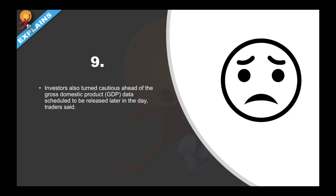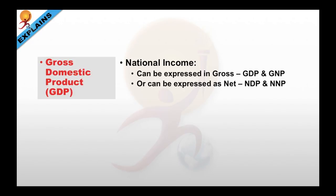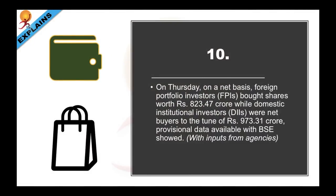Investors also turned cautious ahead of the GDP data. GDP or Gross Domestic Product is one measure of national income for a country. It can be measured by the income method, expenditure method, or the product/value-added method, and takes into account the value of goods and services produced in a country in one year. National income can be expressed as gross — GDP or GNP — or as net — NDP or NNP. GDP stands for Gross Domestic Product, GNP for Gross National Product, NDP for Net Domestic Product, and NNP for Net National Product.